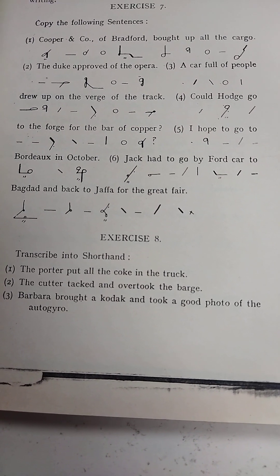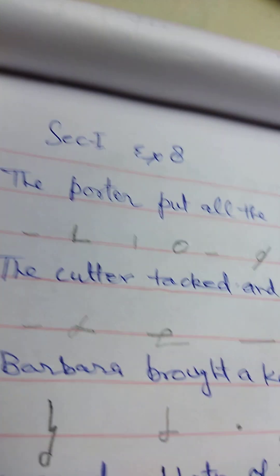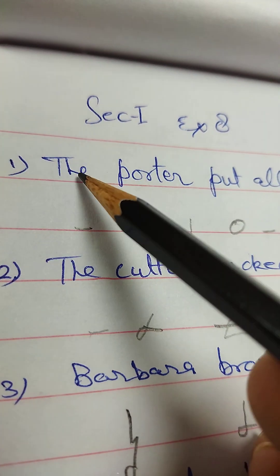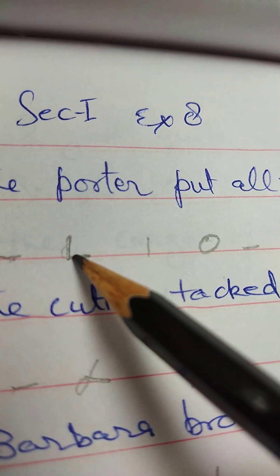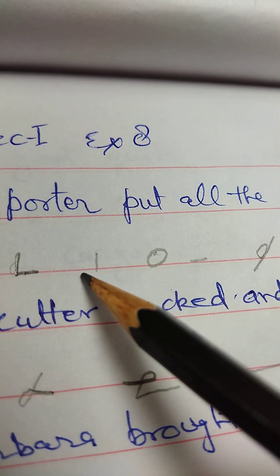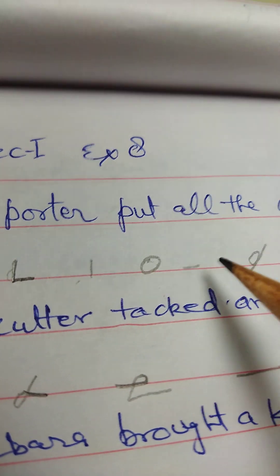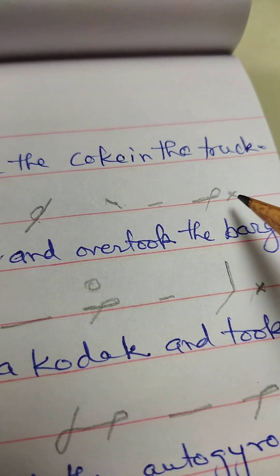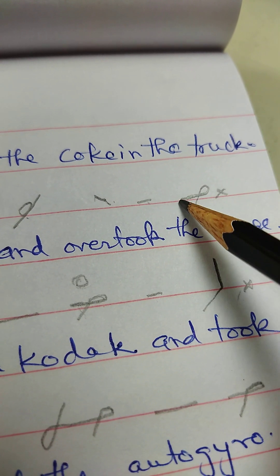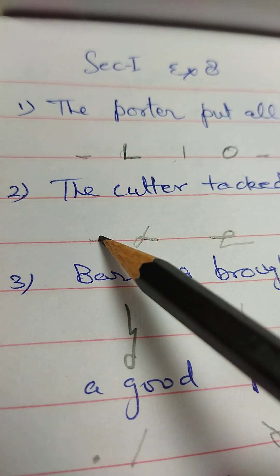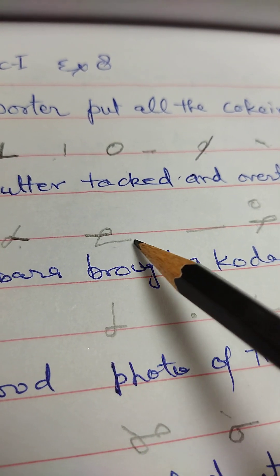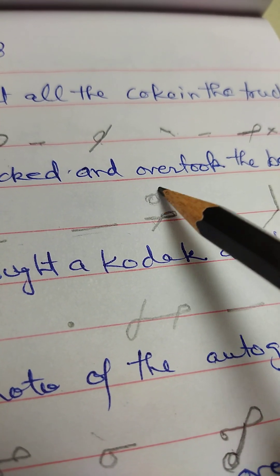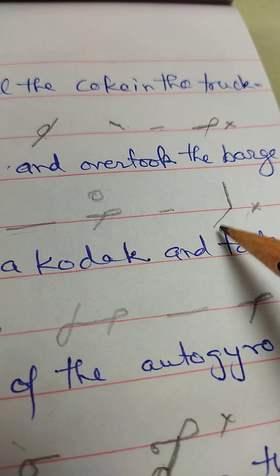We shall do this. The porter is written like this: put all the coke in the truck. The cutter tracked and D is written for N, and overtook the barge.